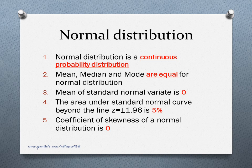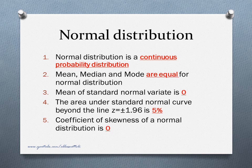Now some questions on normal distribution. Normal distribution is an example of a continuous probability distribution. Mean, median, and mode are equal for normal distribution. The mean of the standard normal variable is 0 — that is, a Z distribution which follows normal with mean 0 and standard deviation 1. The area under the standard normal curve beyond Z equal to plus or minus 1.96 is 5%, meaning Z plus or minus 1.96 covers 95% of the values. The coefficient of skewness of a normal distribution is 0.